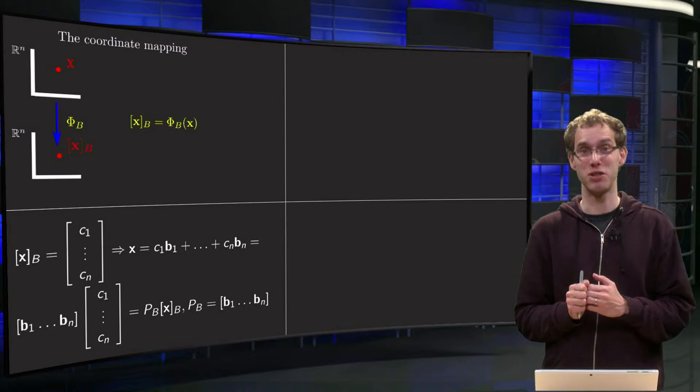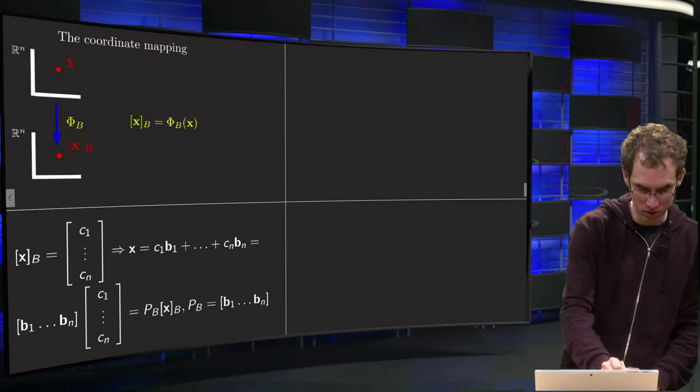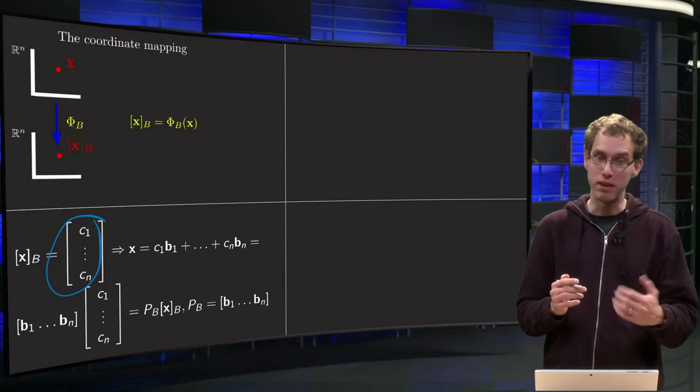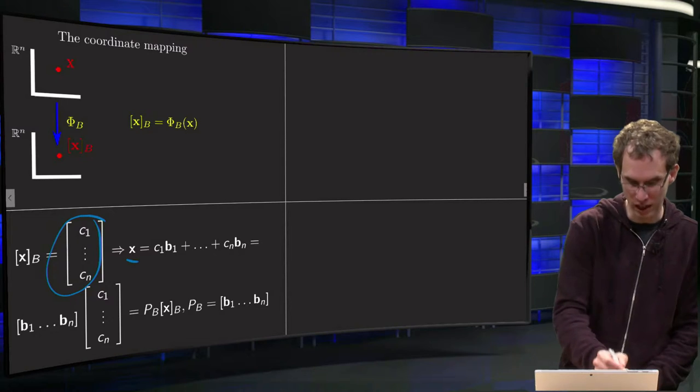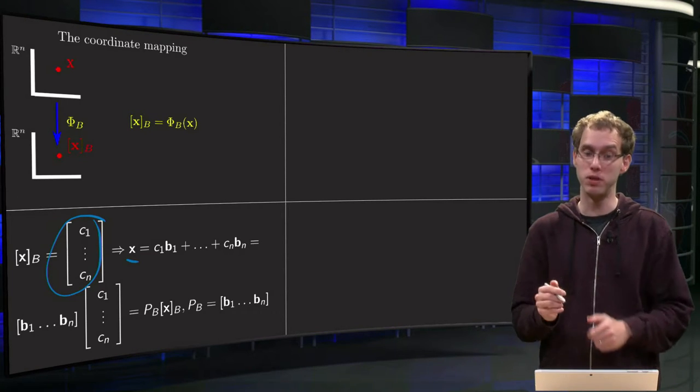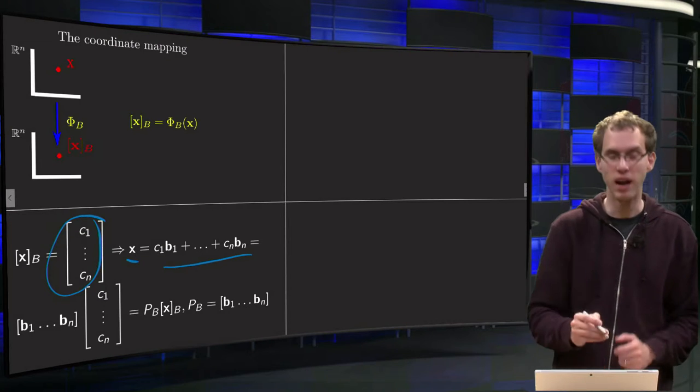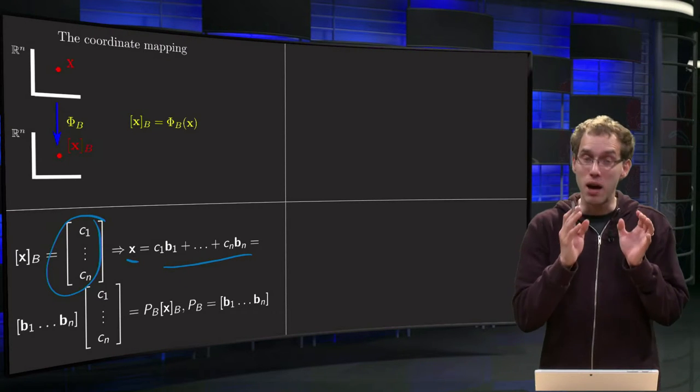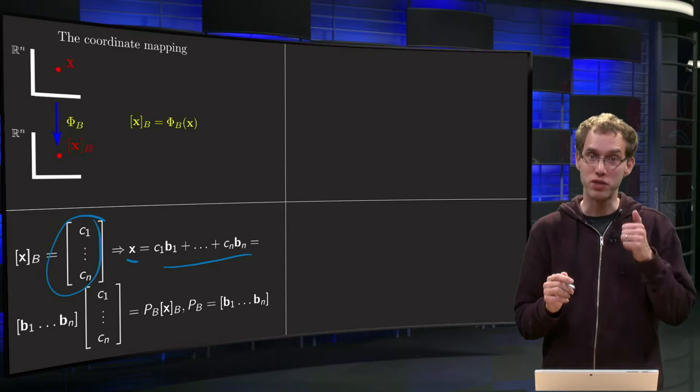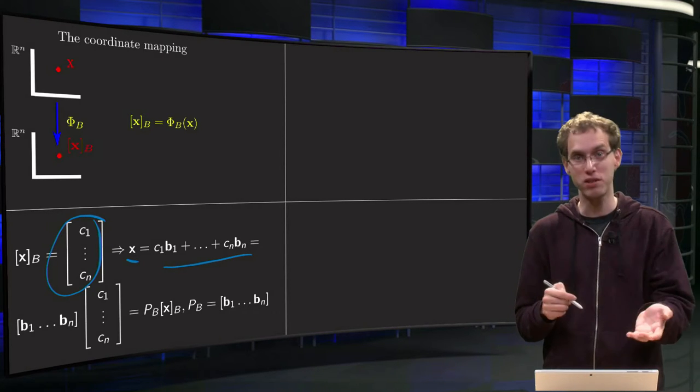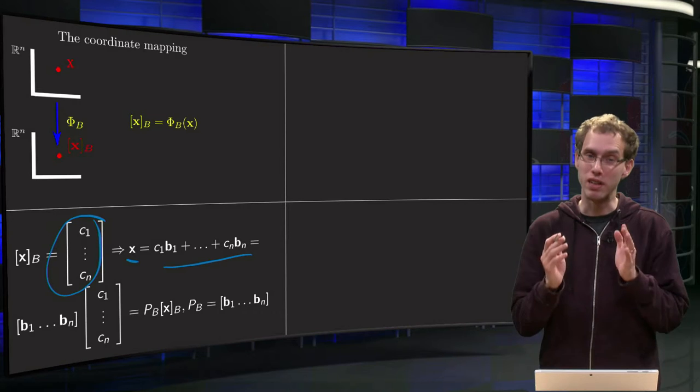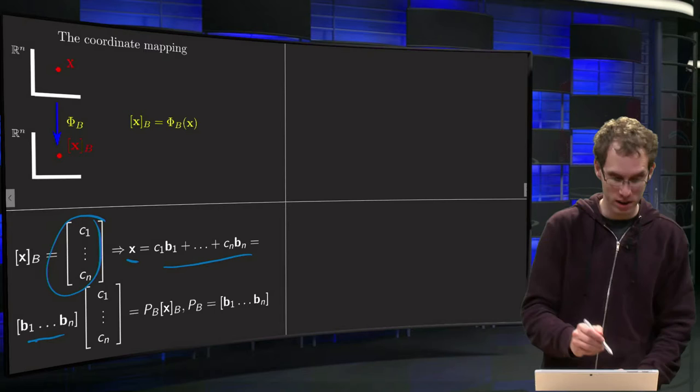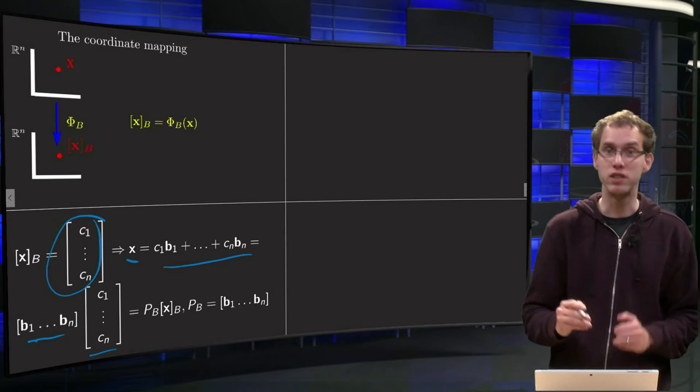Well, here xb is the coordinate vector, let's say it contains weights c1 to cn. Then we know by definition that your original vector x equals c1 times b1 plus c2 times b2 up to cn times bn. And now we can write this as a matrix times a vector because we have scalar times vector plus scalar times vector. So we can turn this into a matrix which contains columns b1 up to bn times a vector with weights c1 up to cn.